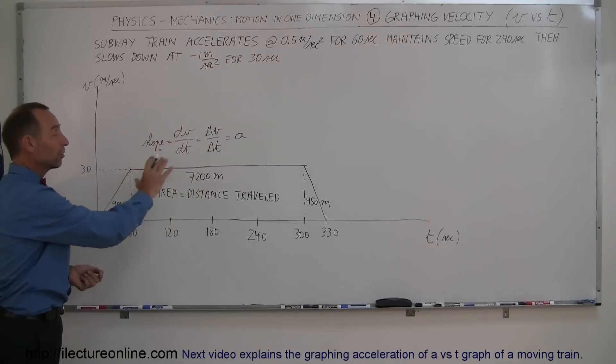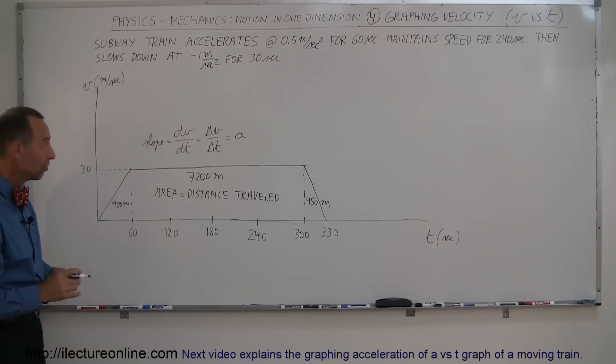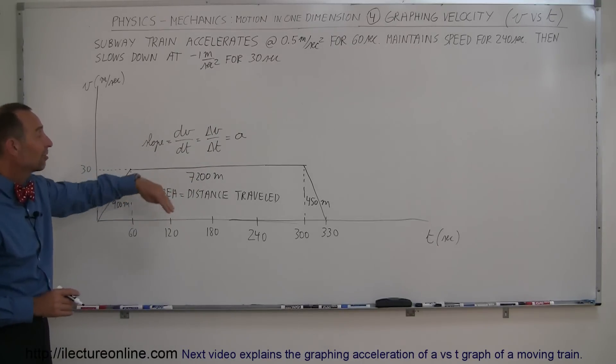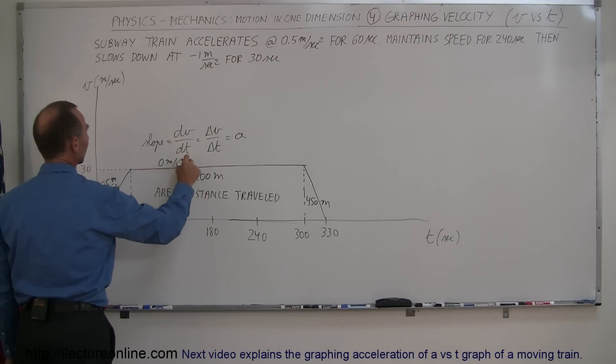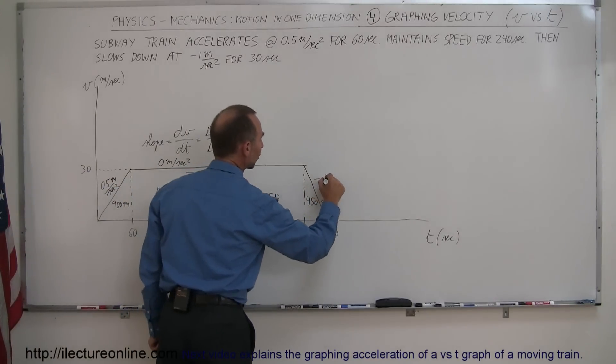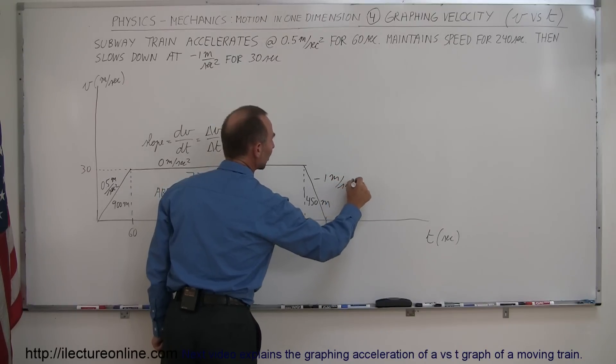So the area underneath the velocity versus time curve represents distance traveled. The slope represents acceleration, so here the slope is a positive 0.5 meters per second squared. Here the slope is 0 meters per second squared, and here the slope is minus 1 meter per second squared.